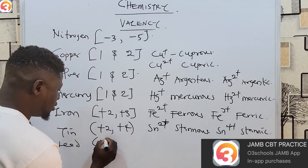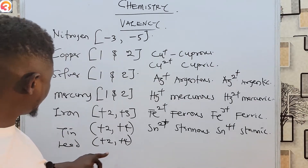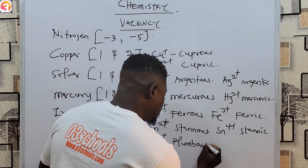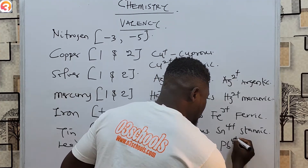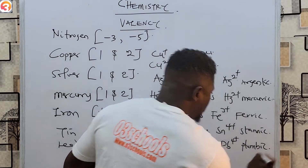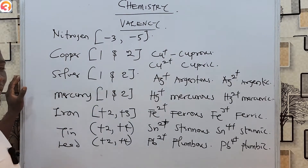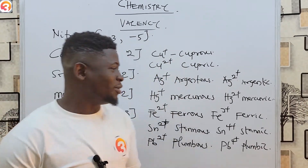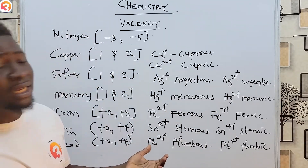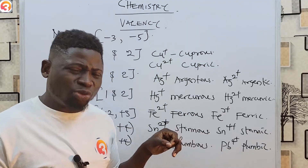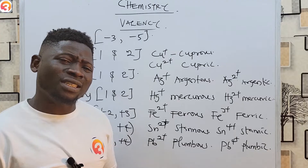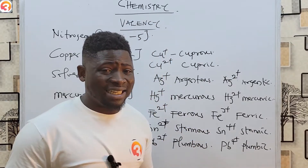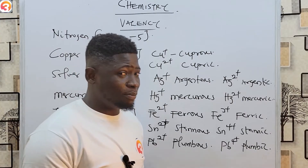Lead (Pb) also has a valency of plus two and plus four. Pb²⁺ is called the plumbous ion, while Pb⁴⁺ is called the plumbic ion. These are elements that show variation in valency — variable valencies. In an exam, you may be asked to state the name corresponding to the valency of one of these elements, so take note of these names. Look up past questions on the O3 Schools Jump App for chemistry practice.